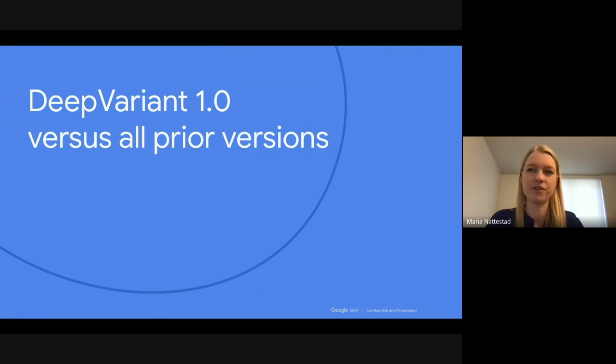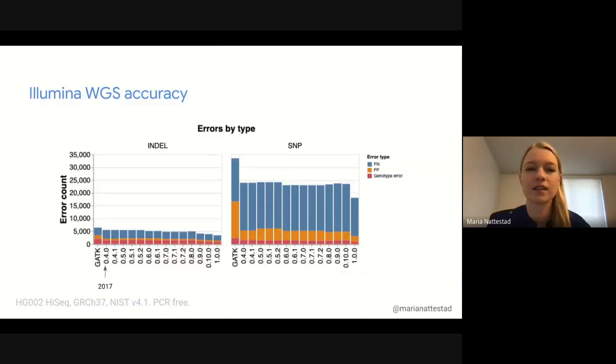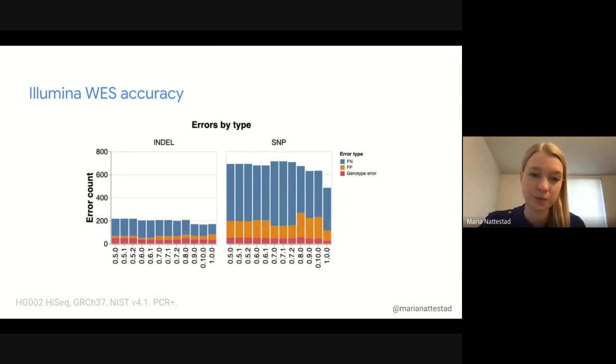You may wonder, with all these experiments, how is DeepVariant actually performing? Especially now that we've released DeepVariant 1.0, how does it compare to previous versions? The Illumina whole genome sequencing model is our oldest model, released in 2017 when DeepVariant was first open sourced as version 0.4. You can see there has been some improvement in accuracy over time, particularly in version 1.0 due to updates in training data. For whole exome, also for Illumina, this started in version 0.5 with similarly nice improvements.